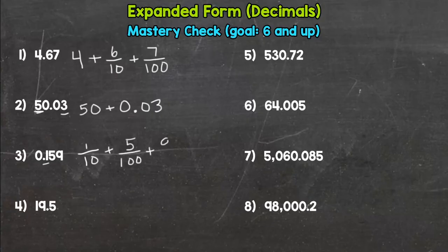Number four, we start with a one that has a value of ten plus a nine with the value of nine and then a five with the value of five tenths.